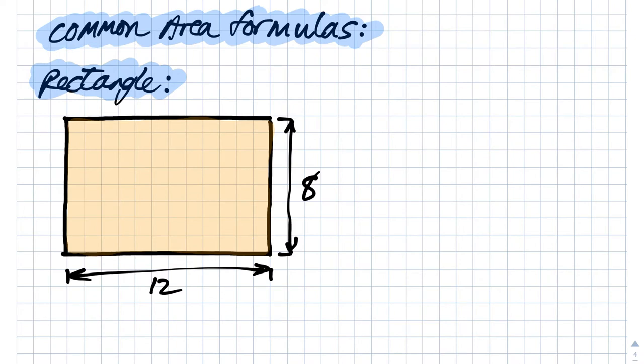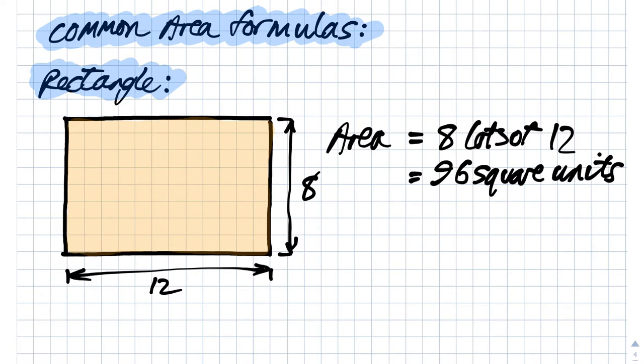Now as we kick off our look at common formulas for area, we start with the rectangle. In this case you can see we've got eight lots of 12 squares. So in total we have 96 square units.